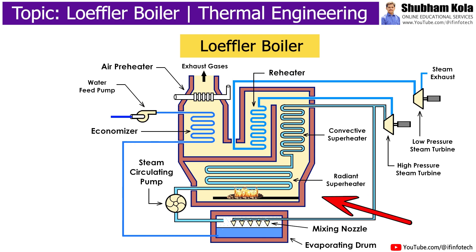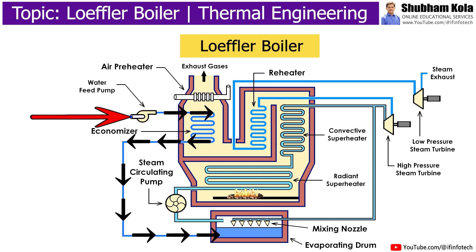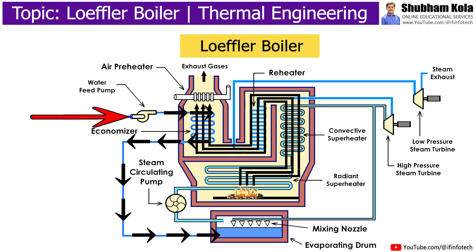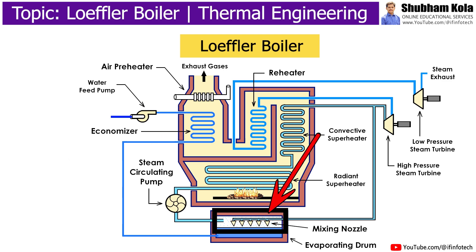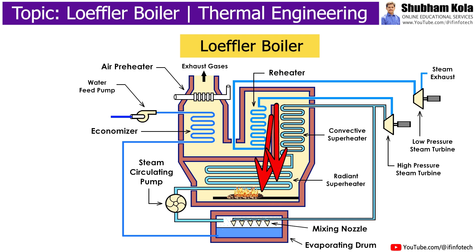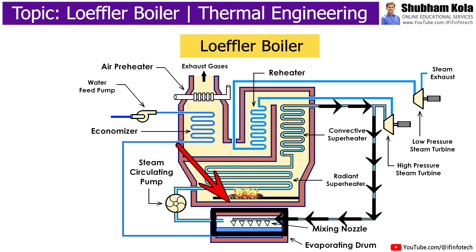During the working, the water feed pump feeds water through the economizer, which picks up some heat from the outgoing flue gases and discharges it into the evaporating drum. The evaporating drum is constructed outside the furnace setting, where a mixing nozzle is inside the evaporating drum. It mixes the steam and feed water from the superheater and evaporates them.